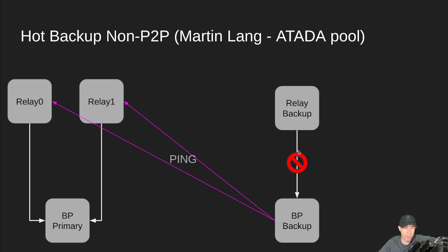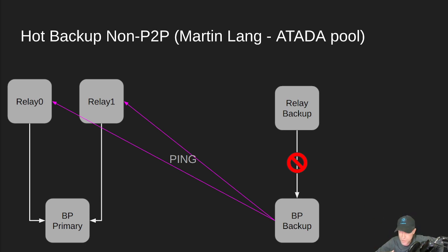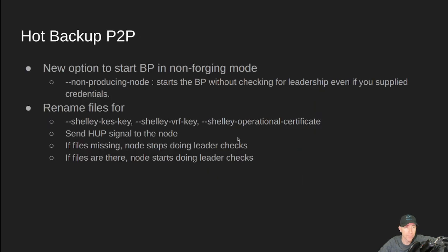Now, once we have bidirectional connections, this method is not really going to work anymore. Because any connection that my block producer makes out to the backup relay to stay up to date with the tip — my blocks could also flow out on that connection — and then I'd be making blocks from both a backup and a primary at the same time, which is not what we want. So the IOG team came up with a new technique for turning on and off block production on a backup node.